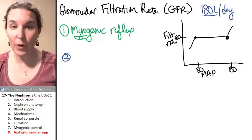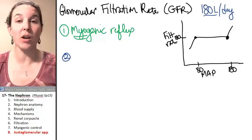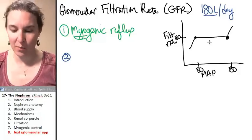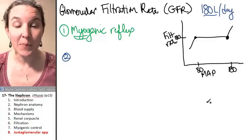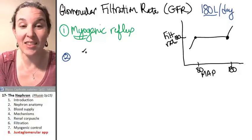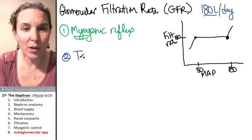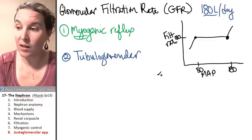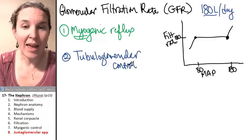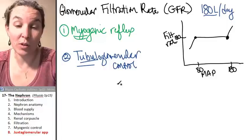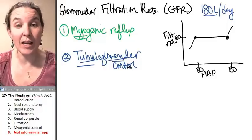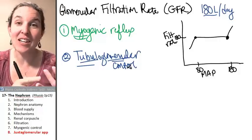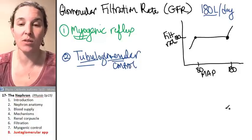The myogenic stretch reflex controls GFR and regulates it to keep it within 180 liters per day, no matter what the blood pressure is. That is no small feat, and it's just one strategy. There's another whole strategy, and this one is called tubuloglomerular control, which the nephron and blood supply are going to work together to utilize.